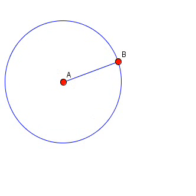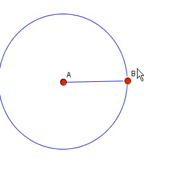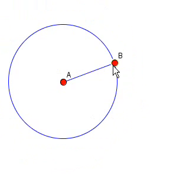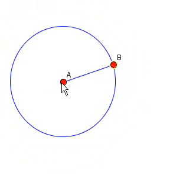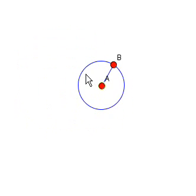We construct a circle with centre A and radius AB. B is a point on the circumference and if we move it we can change the size of the circle. If we move A we can change the size and position of the circle.